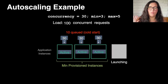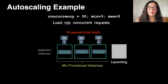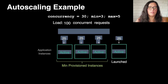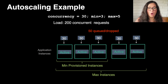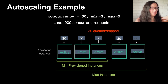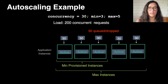Suddenly we have 100 requests and the fourth instance is not yet ready. So there are 10 requests that cannot be served and are queued, waiting for the instance to launch. When the instance launches, those queued requests are served. Now with a load of 200 but a maximum of five instances, there will be 50 requests that get dropped or queued until other instances finish processing. Unlike Lambda, here the maximum requests per instance is a hard limit and things will get throttled.